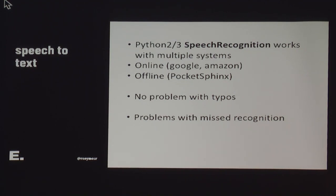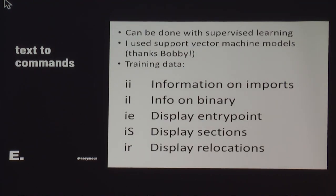First step: speech recognition. Those two words jammed together are a Python module that anyone here can use, and right off the bat you can use CMU Sphinx, which runs on your machine, or Google, Amazon, Microsoft, or whoever else is offering voice recognition. And then the second part you need — so you have speech to text, great, easy — then you have text to commands, and how we're going to do that, in this demo, is something called support vector machines.